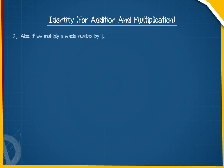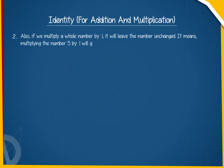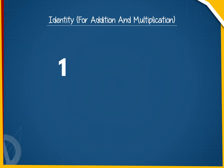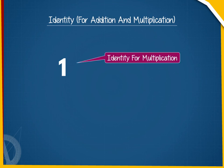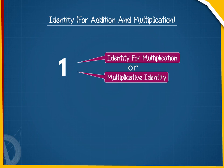Also, if we multiply a whole number by 1, it will leave the number unchanged. It means multiplying the number 5 by 1 will give the product 5 — 5 into 1 is equal to 5. We call 1 the identity for multiplication, or multiplicative identity, for whole numbers.